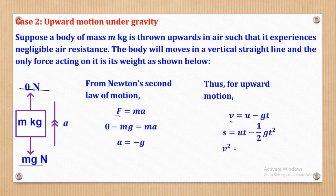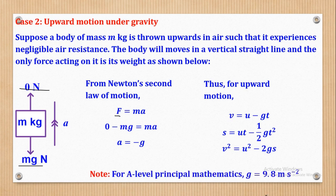The first equation will now be V equals U minus Gt. The second equation is S equals Ut minus half Gt squared. And the third equation is V squared equals U squared minus 2gs. What you should note is that G is a constant, and in A-level mathematics it is given as 9.8 meters per second squared, unless stated otherwise.